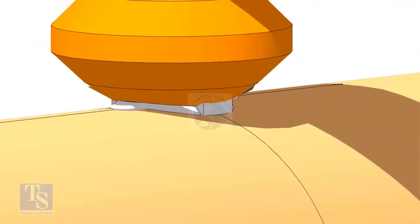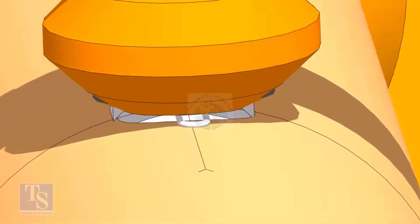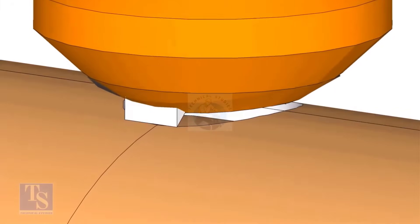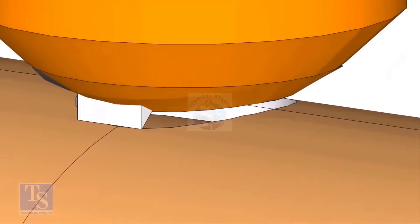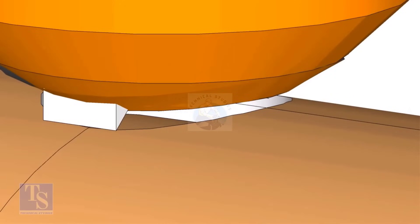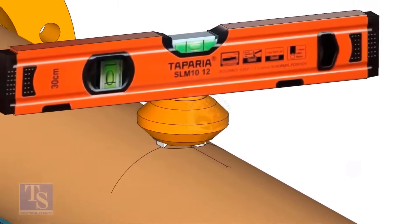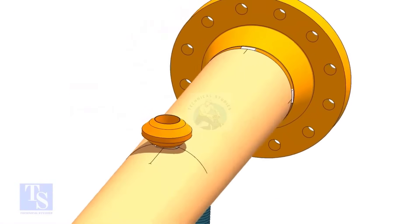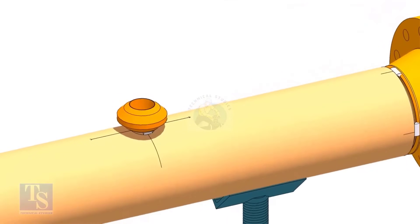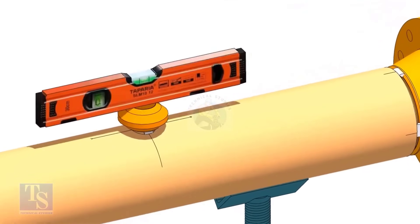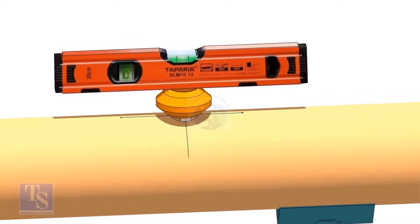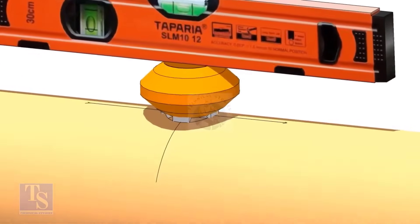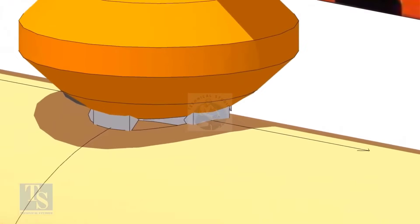Remove the gap rod, check the level again. And if it is correct in both directions, tack weld on the longitudinal sides as well.